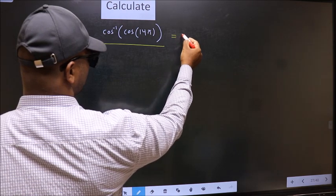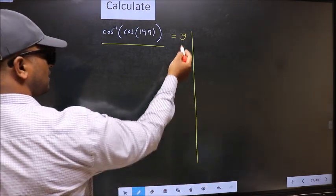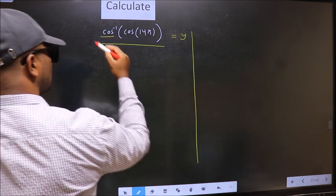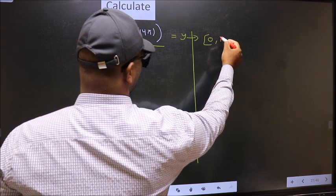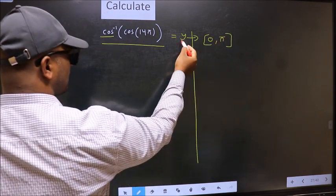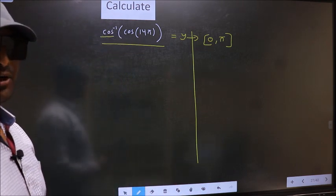So let us take the answer to be y. And the condition is y should lie in the range of cos inverse which is 0 to pi. Our answer should lie in this interval. Clear with this point.